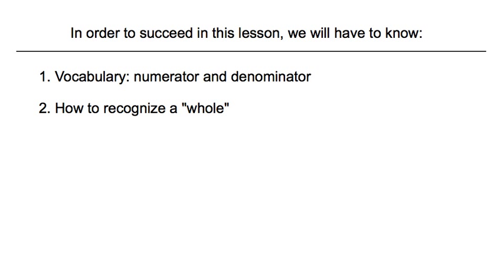So in order to succeed in this lesson, you'll have to know a few things. Number one, you'll have to know the vocabulary. So when I say numerator, you know which part of the fraction I'm talking about. And when I say denominator, you know which part of the fraction that is as well. And then you're going to have to recognize what is one whole. And one whole in fraction form looks like something like 3 over 3 or 4 over 4. Any time the numerator and the denominator are the same, all of that equals 1. And if you can recognize that, this lesson will be simple.